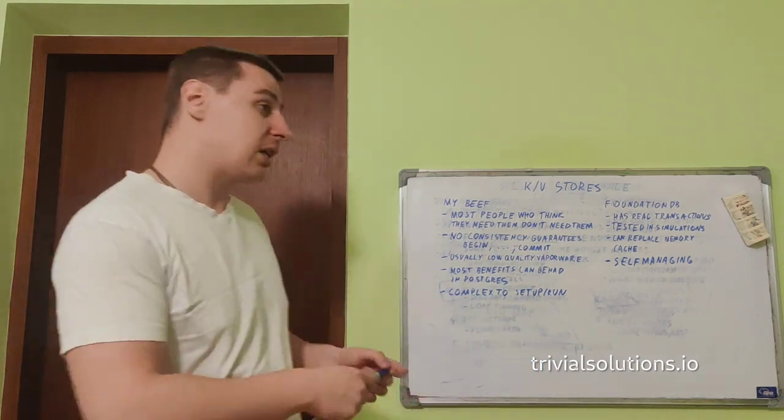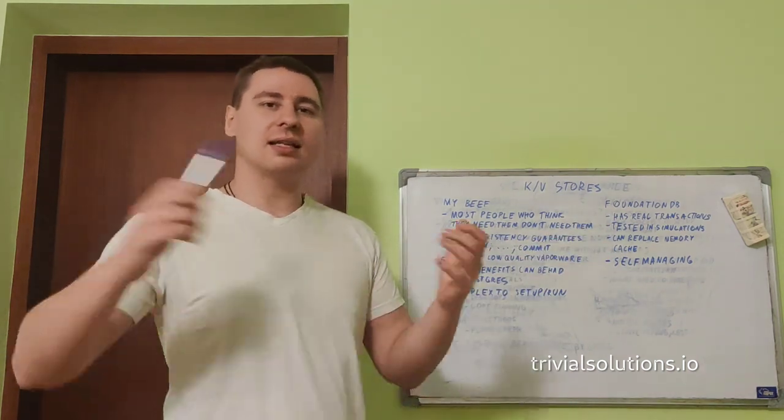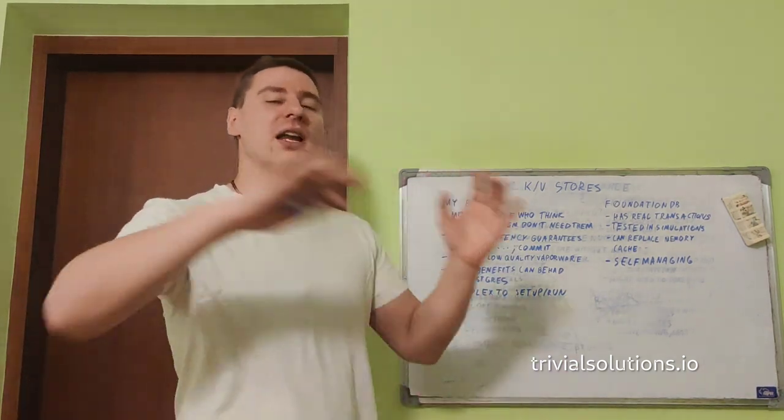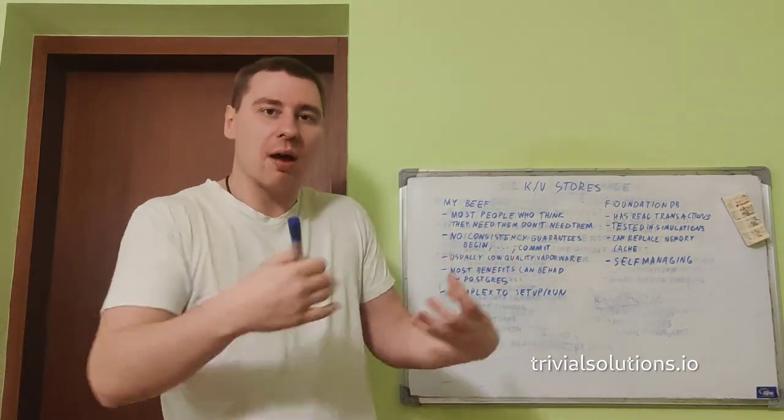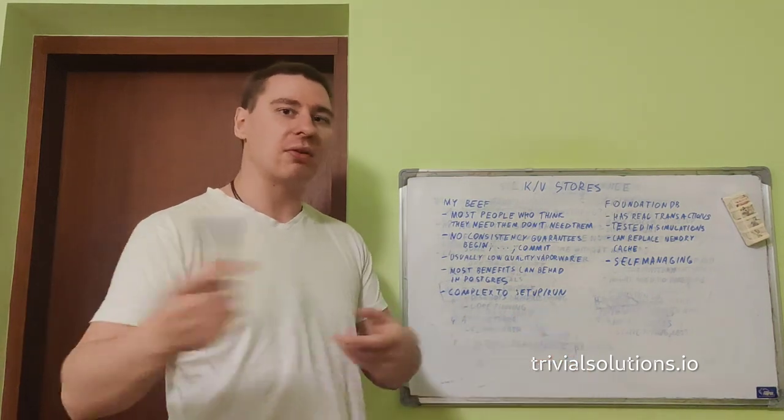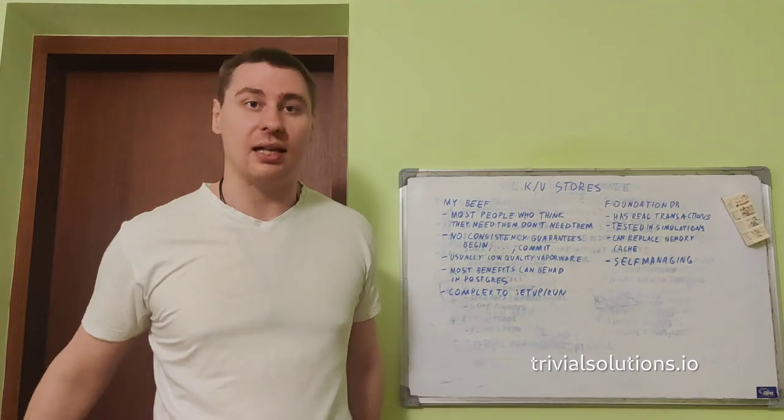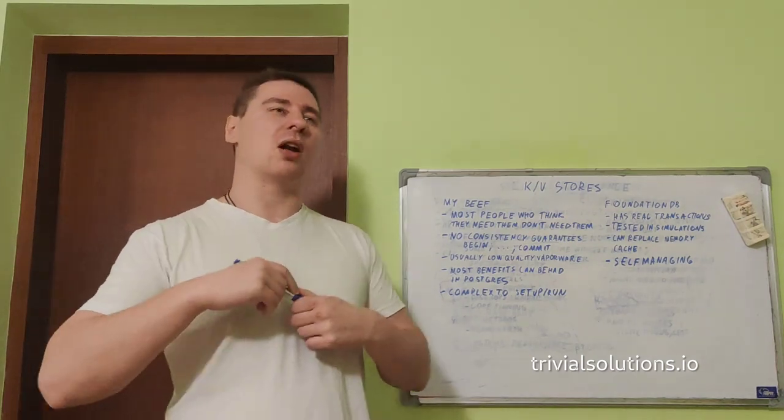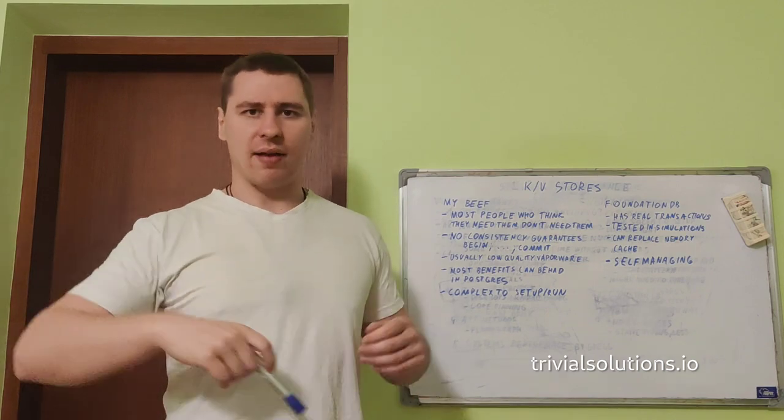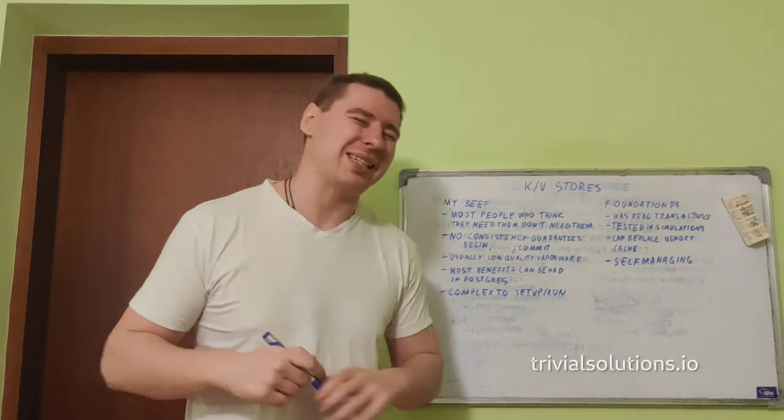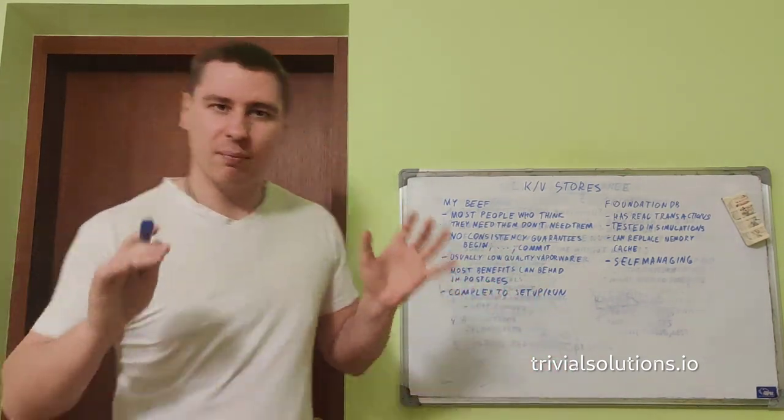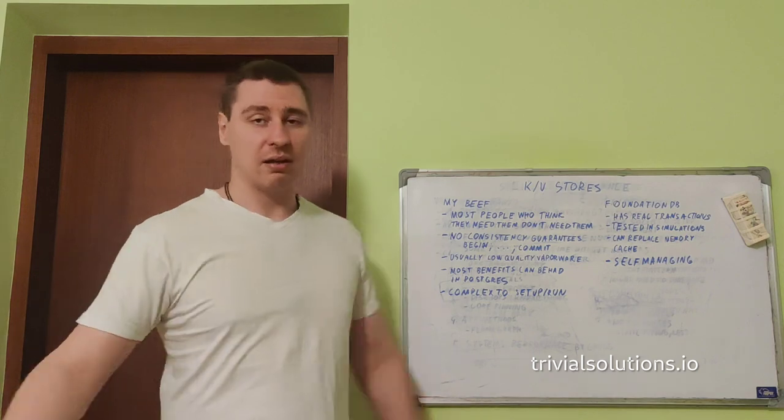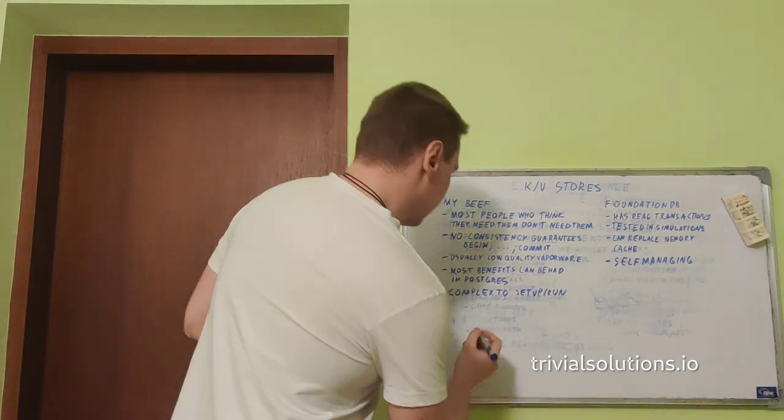What instantly sets this apart from most key-value stores today: it has real transactions. It doesn't have transaction per key like some databases where you can modify that key consistently. Nobody cares about transaction on a single key. When people talk about transactions, they care about transactions where you can modify as many records as you want, as many key spaces as you want, and it's all consistent. This database actually has that. I'll put a link in the description of a video that explains by one of the founders how this works. I'll just make a simple, very broad overview.